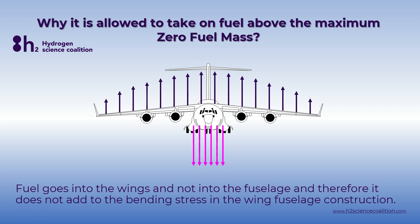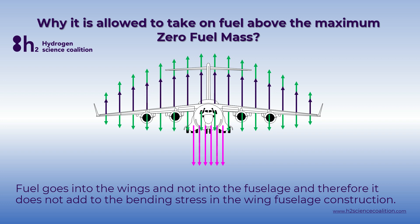The reason for this is that jet fuel is not going to be stored in the fuselage, but in the wings of the aircraft. Of course, here too we need more lift to carry this fuel, but it does not add to the bending and shear forces in the wing-fuselage construction. Because the weight of the fuel is lifted at exactly the same place where the lift is produced — they cancel each other out.